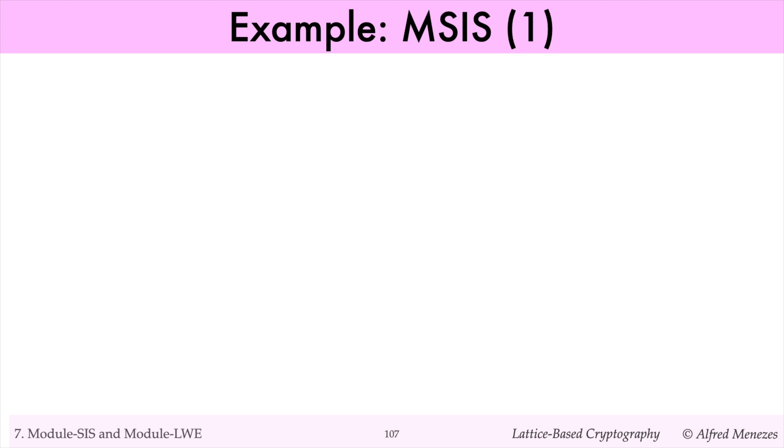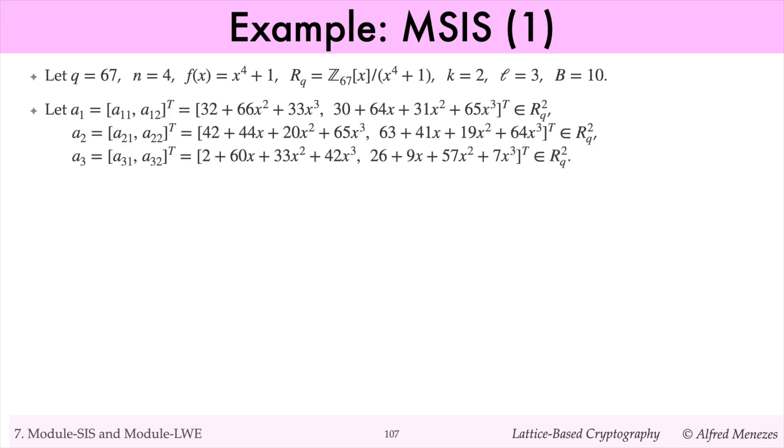Here's an example of module SIS. Let's take q to be the prime 67, n to be 4. So the ring of polynomials Rq is the set of polynomials over z67 modulo x to the 4 plus 1. We'll take k to be 2 and l to be 3, and b to be 10. The three randomly selected module elements are a1, a2, and a3, each being a vector of two polynomials in Rq.